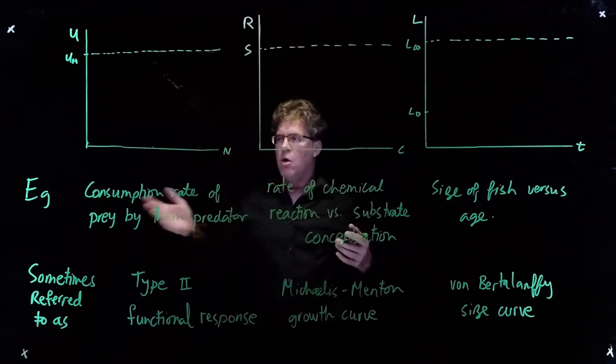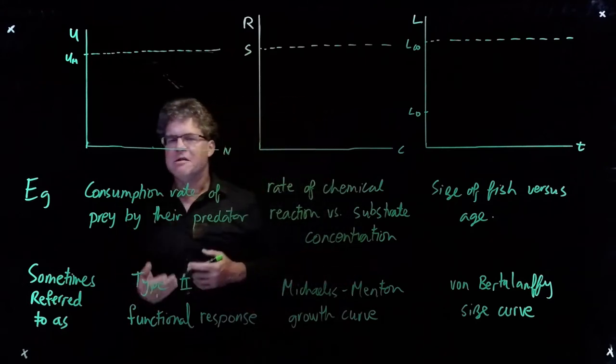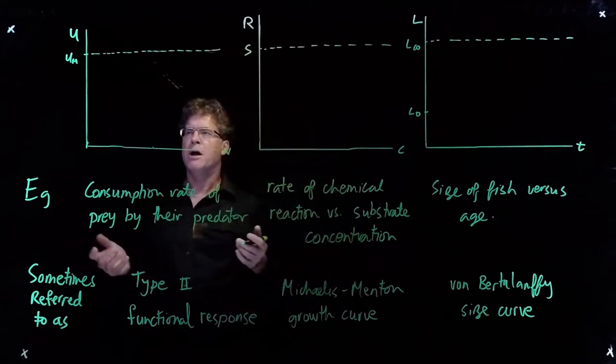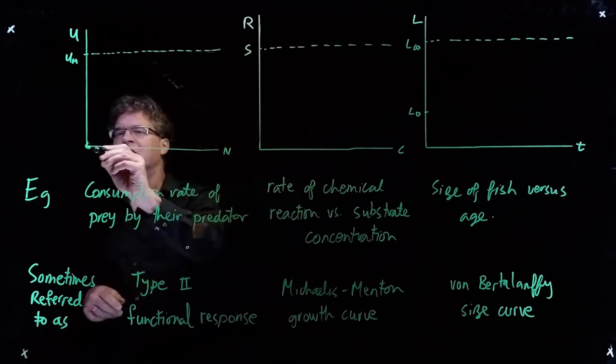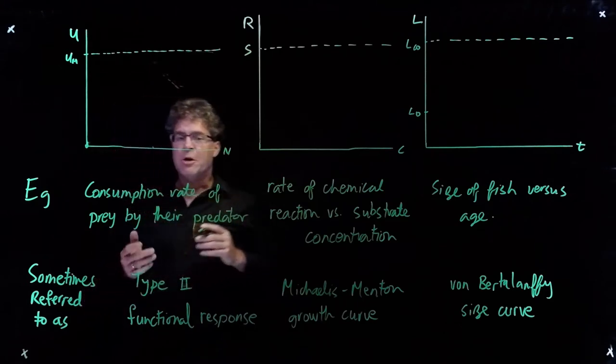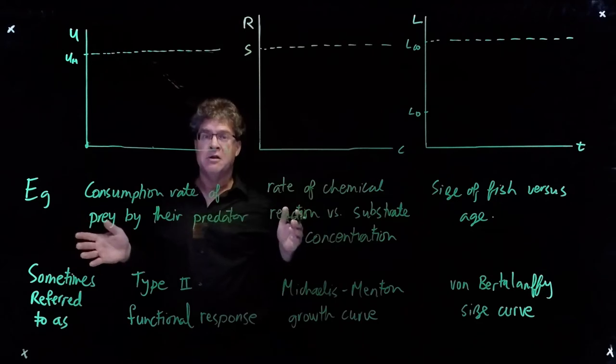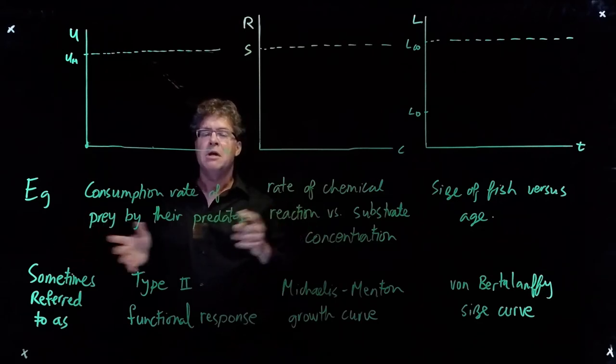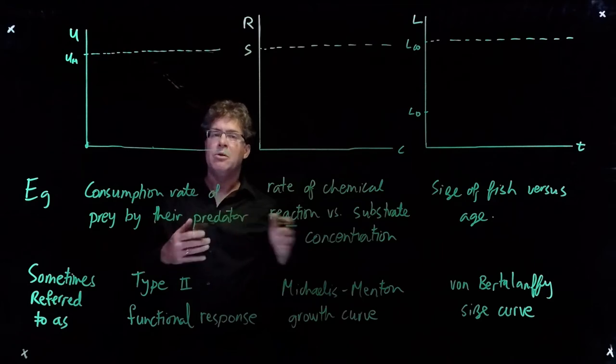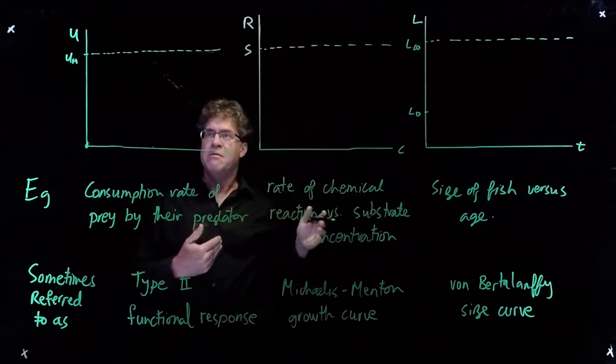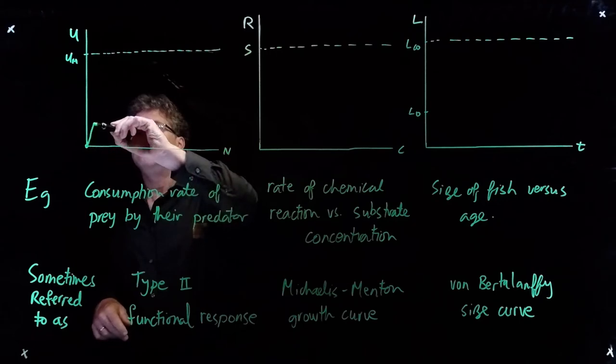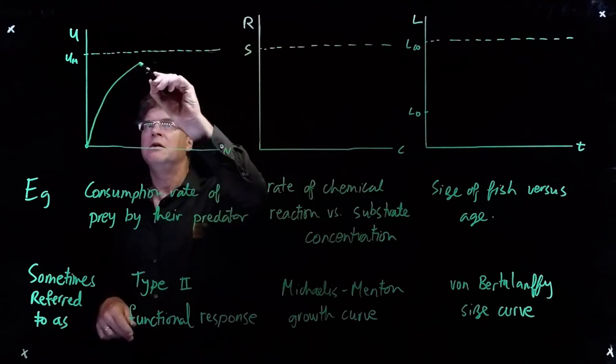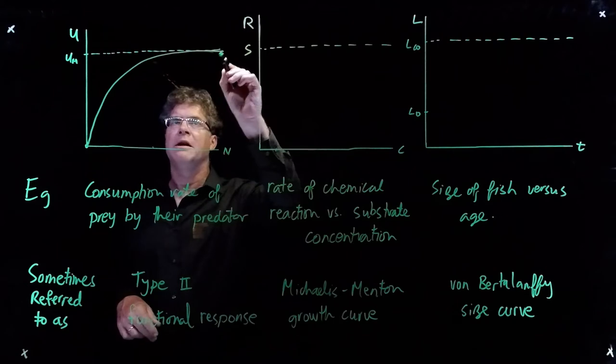Over here, consider the consumption rate of prey by their predator. When there's no prey, the rate of consumption is zero. And when there's very many prey, the predators are eating as fast as they can. So even when the prey density increases, they can't consume any faster. The shape of the curve is something that grows and then levels off like this.